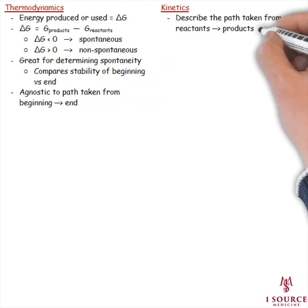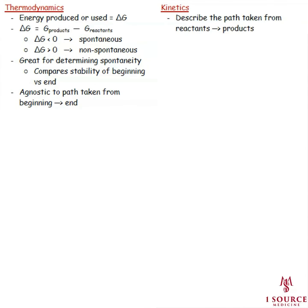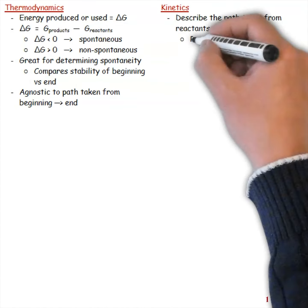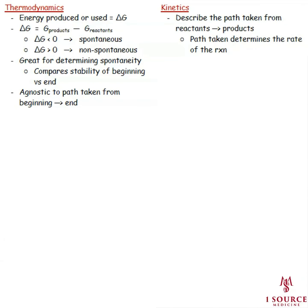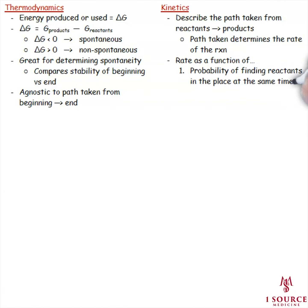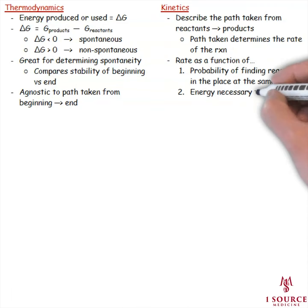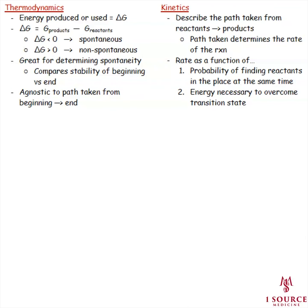Kinetics, on the other hand, examine the path taken from reactants to products. Just like when you're driving a car from point A to point B, the path chosen has far more effect on how long the trip takes than the straight-line distance between the two points. By investigating the energy profile of the path taken, kinetic functions can determine the rate at which a given product will be synthesized as a function of: one, the probability of both reactants coming together in the same place at the same time, and two, the energy necessary to overcome the transition state.